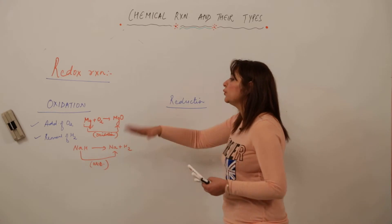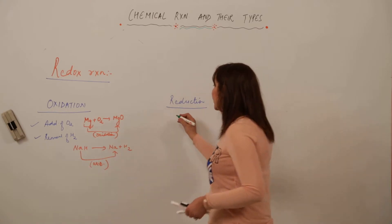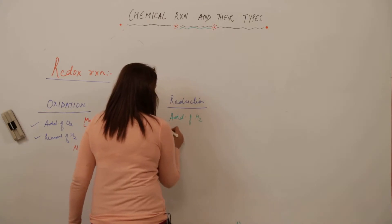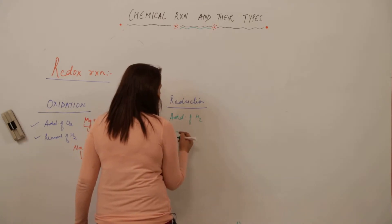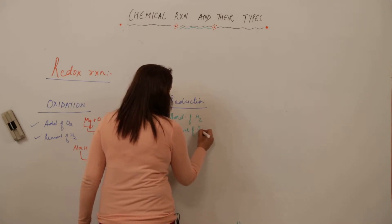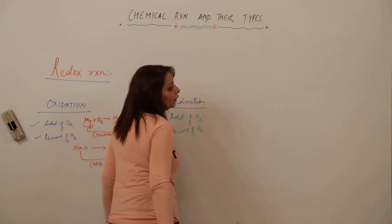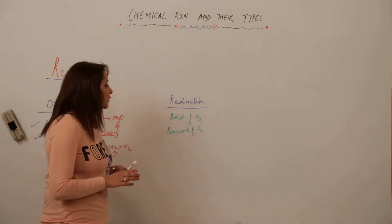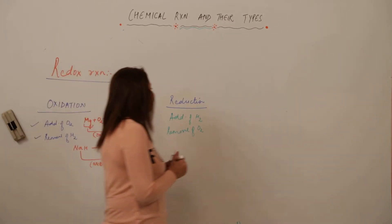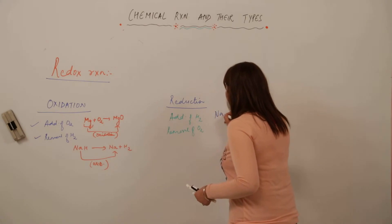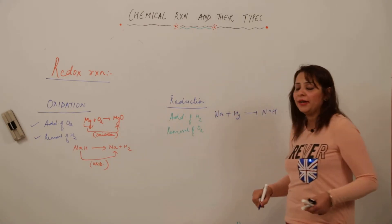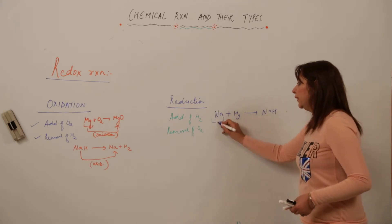Coming to reduction — it is just the reverse of oxidation. Reduction is the addition of hydrogen or an electropositive element, or the removal of oxygen or any electronegative element. For example, if I have sodium and add hydrogen to it to form sodium hydride, sodium is getting attached to hydrogen — that means reduction is taking place.